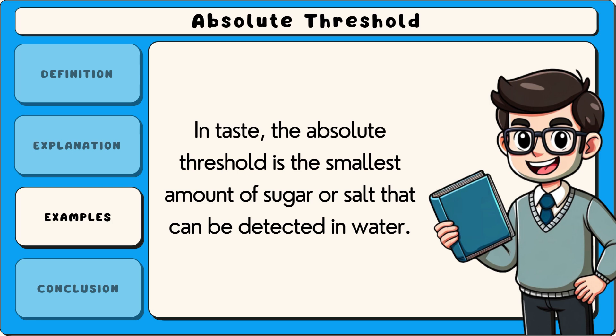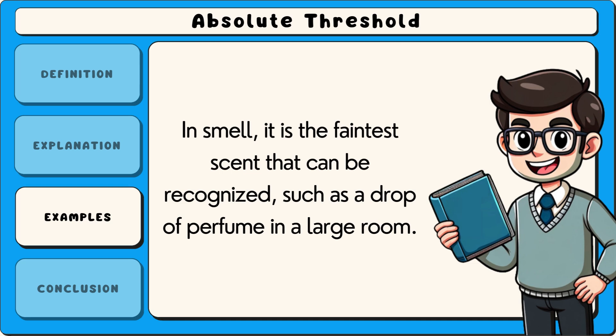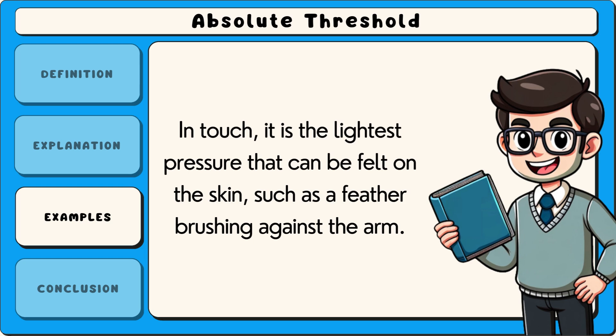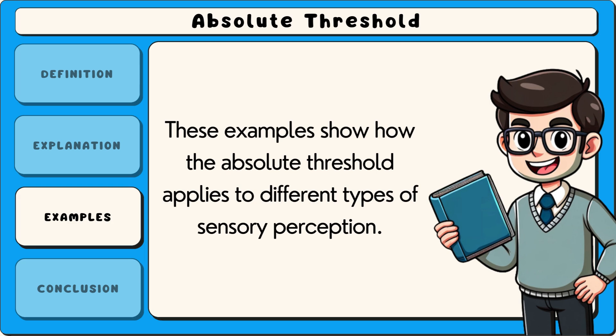In taste, the absolute threshold is the smallest amount of sugar or salt that can be detected in water. In smell, it is the faintest scent that can be recognised, such as a drop of perfume in a large room. In touch, it is the lightest pressure that can be felt on the skin, such as a feather brushing against the arm. These examples show how the absolute threshold applies to different types of sensory perception.